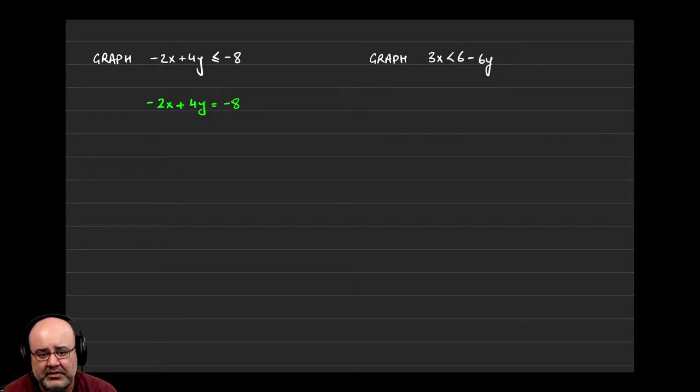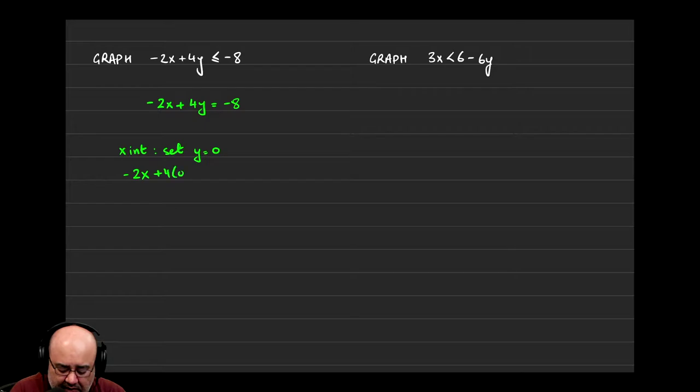The easiest or most efficient way is probably to find x and y intercepts. That being said, the other two options will work just fine, maybe not as quickly. As a reminder, to find the x-intercept, we set the y-coordinate equal to 0.